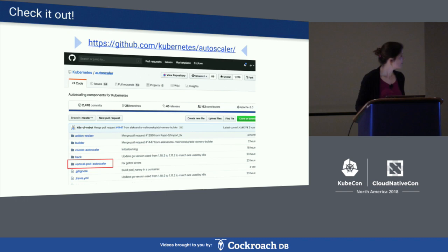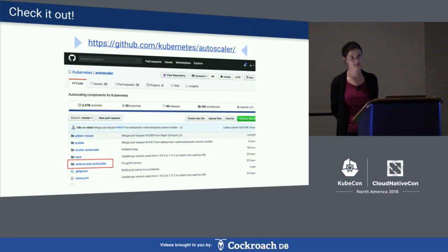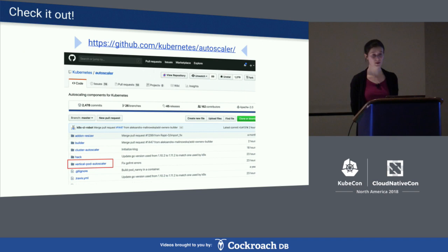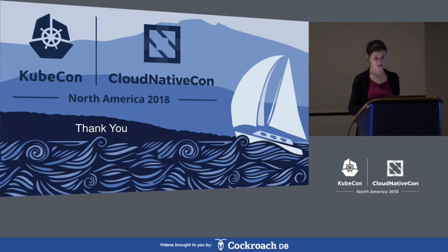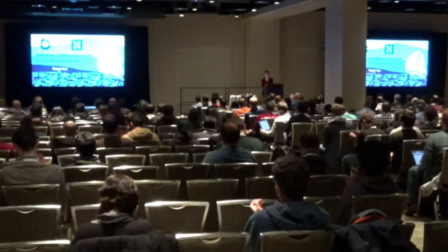We're part of SIG autoscaling. You can find us at the Kubernetes autoscaler repo on GitHub. Please go check it out, check VPA out, and let us know how it works for you. Thank you very much.